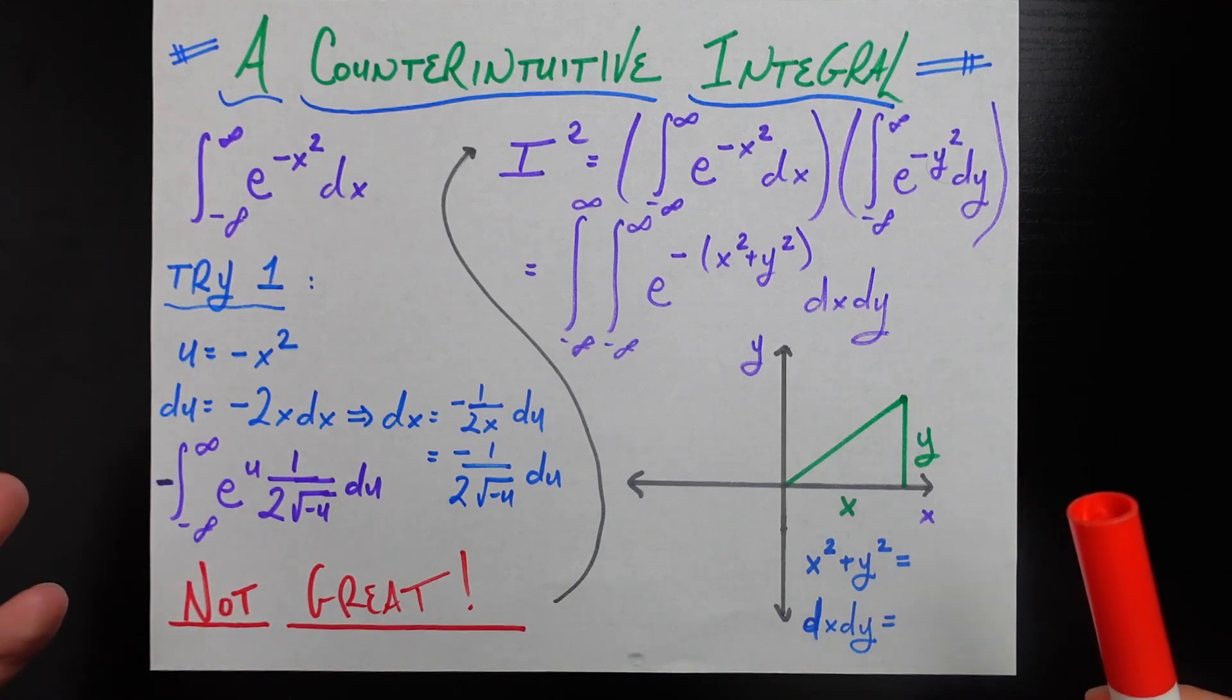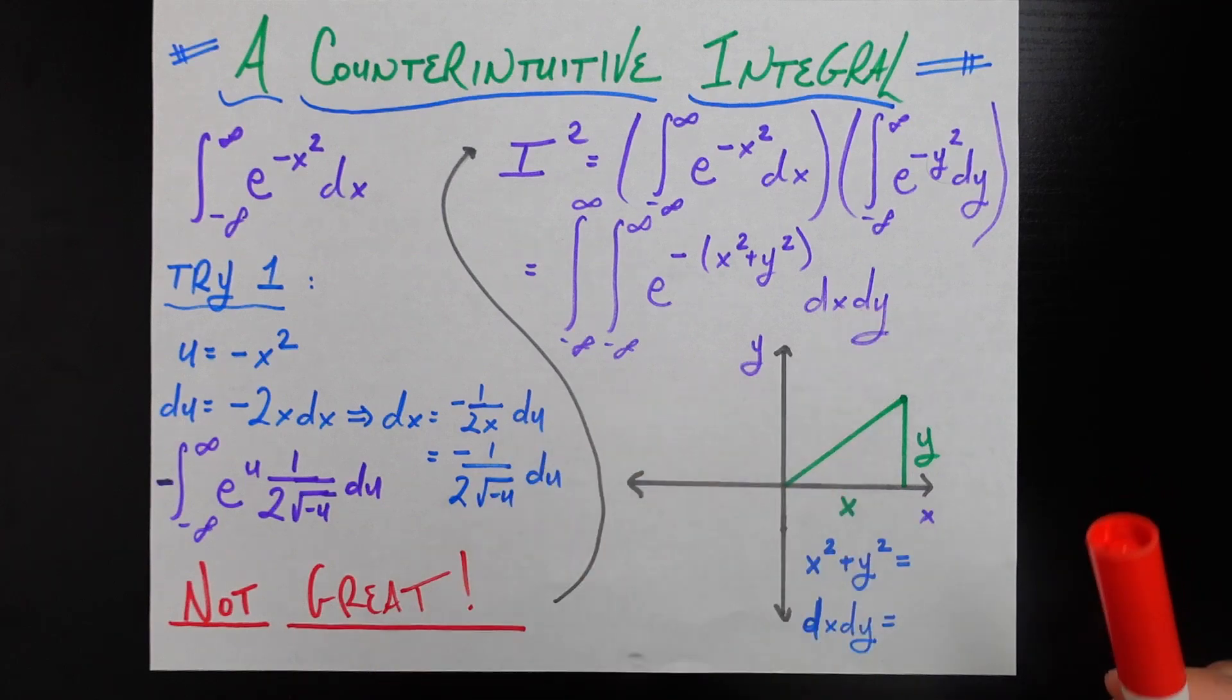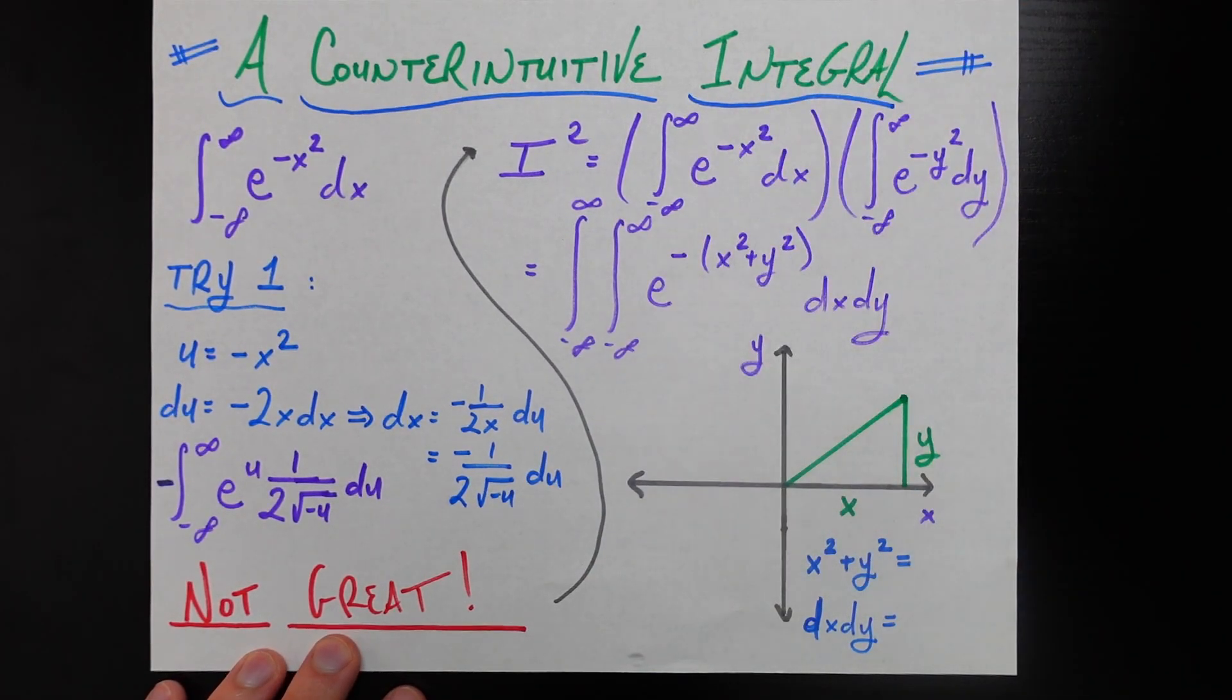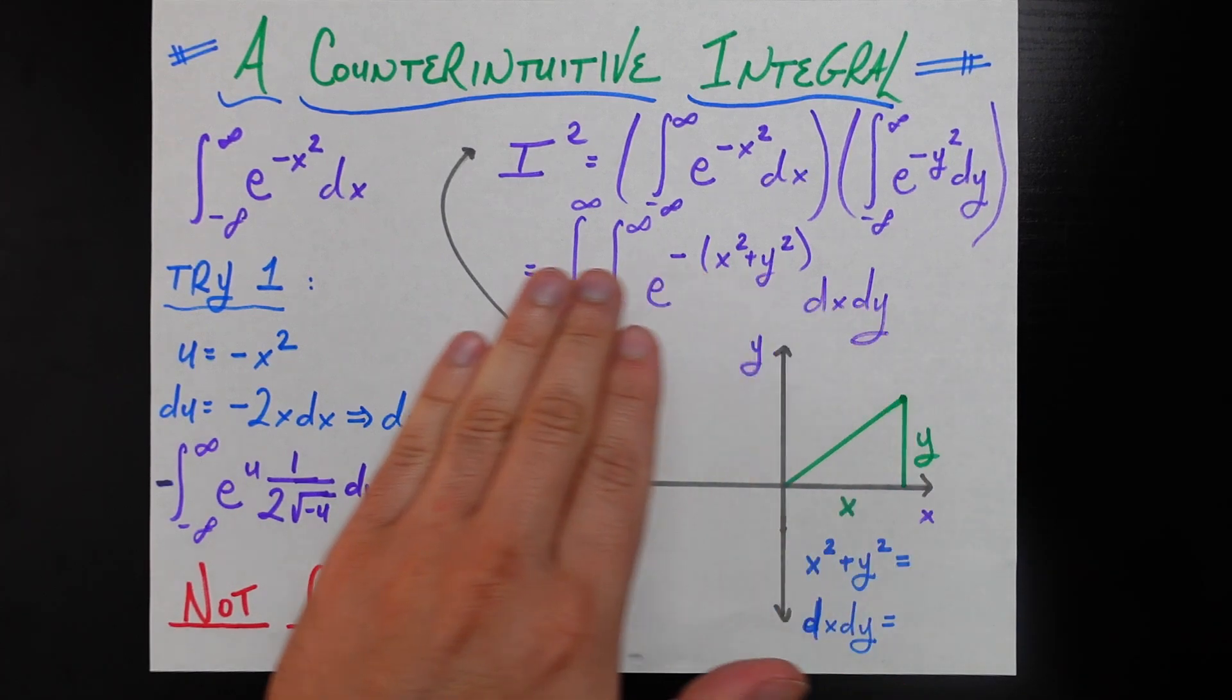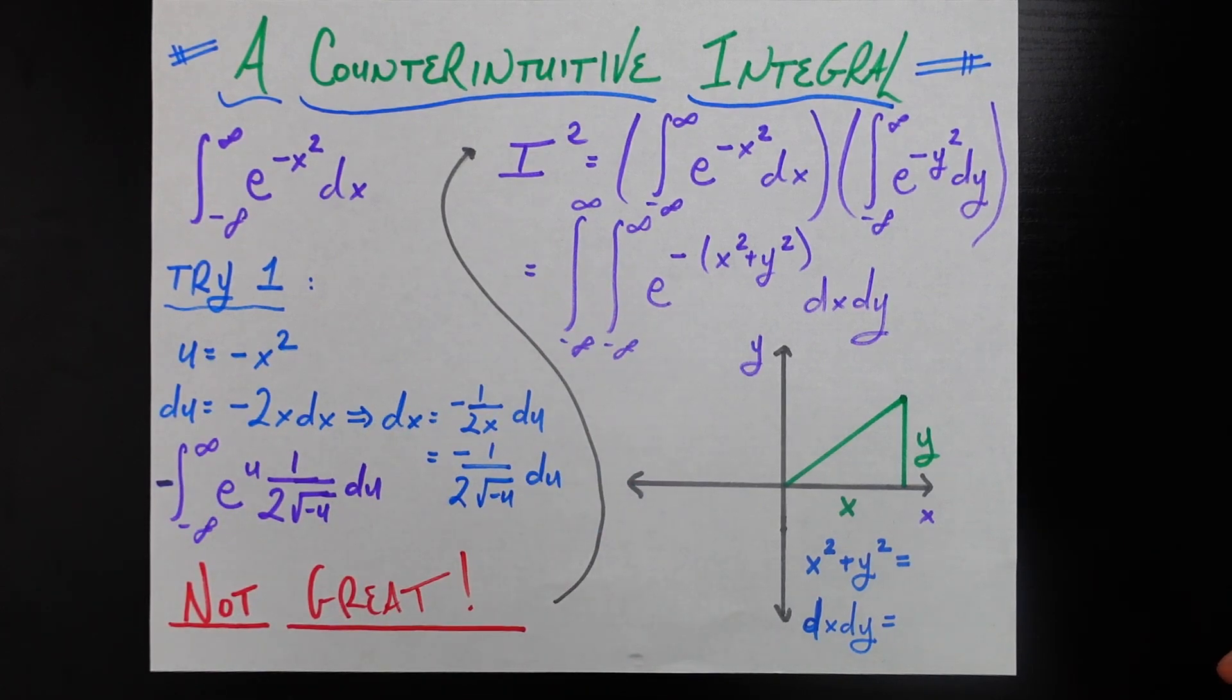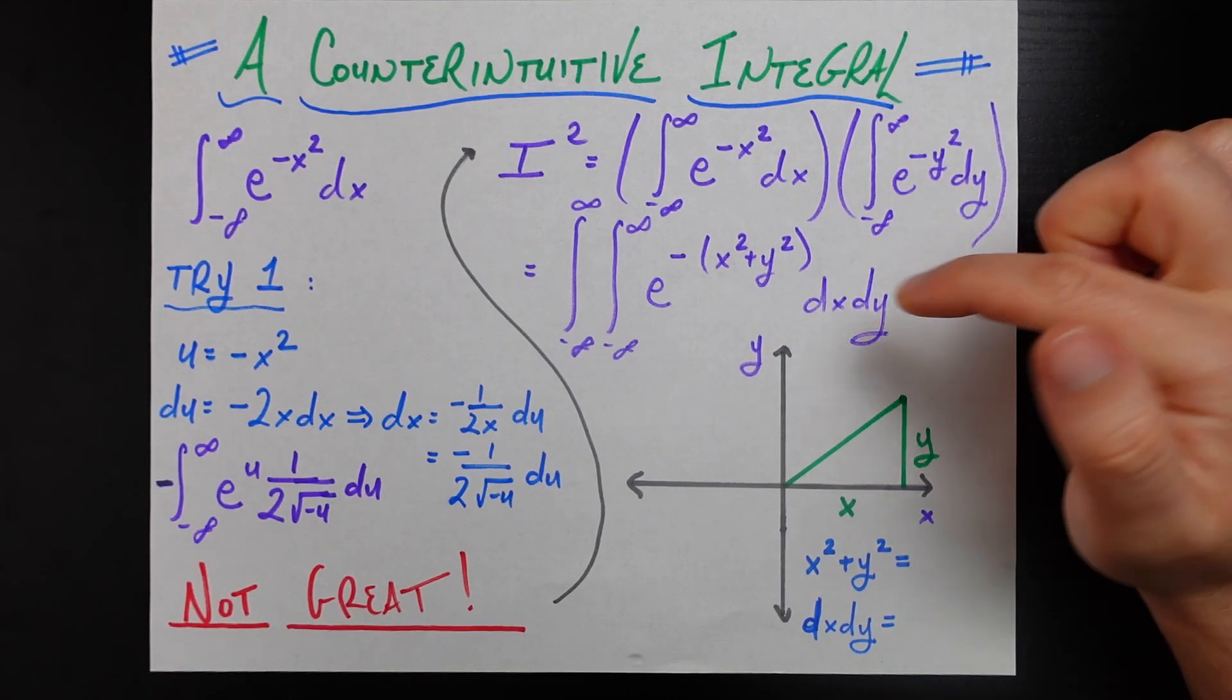You're going to have to take my word that doing this really counterintuitive thing that initially makes this integral way more complicated is actually going to bring us to a place where we can solve this elegantly. If we call this integral capital I, we're going to square the integral. Here I wrote it in terms of x, and here in terms of y. We're going to put that in terms of a double integral.